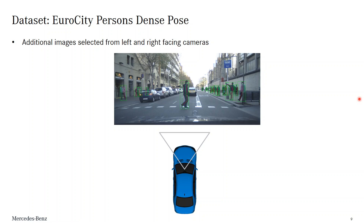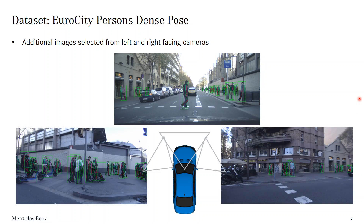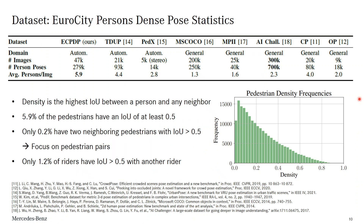For the original ECP dataset, we only used images from the front-facing camera. For our new pose dataset, we also selected images from the side-facing cameras. For the selection of images for manual bounding box and pose annotation, we focused on scenes with a high number of persons. For the original images from the ECP dataset, that was done based on the number of bounding box annotations. For the new images, we ran a Faster RCNN detection method to find images with a high number of persons. We end up with 47,000 images, of which only 14,000 are part of the original ECP dataset. We have the highest average number of poses and the highest number of pose annotations among the automotive pose datasets.